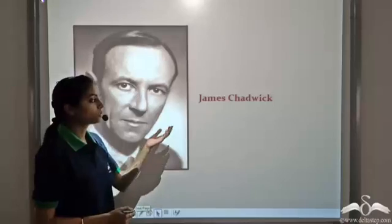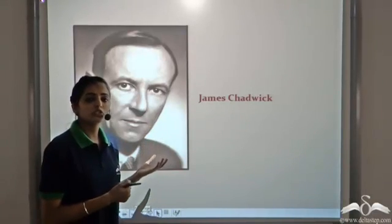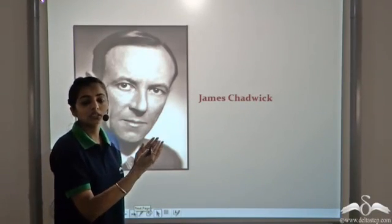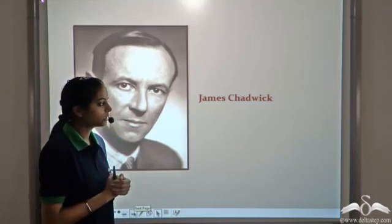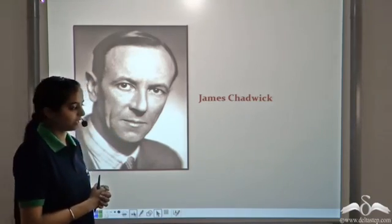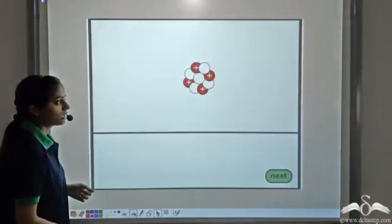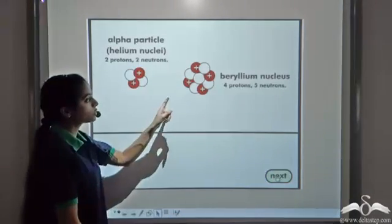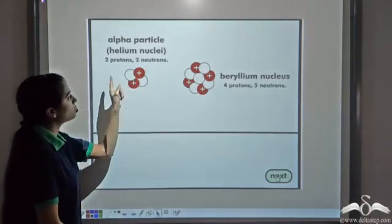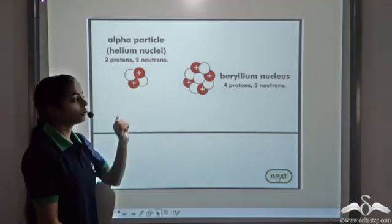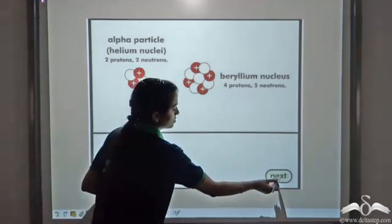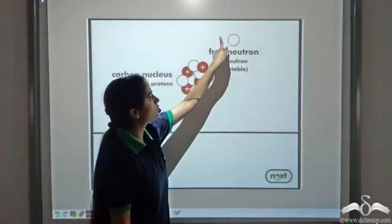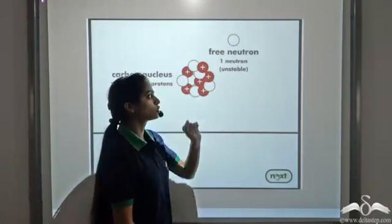One such scientist was James Chadwick. He was curious to know where that extra mass in the helium nucleus was coming from, so he performed a number of experiments. In one such experiment, he used a beryllium nucleus and projected an alpha particle onto it. He observed that a particle was released, and he called it the neutron.